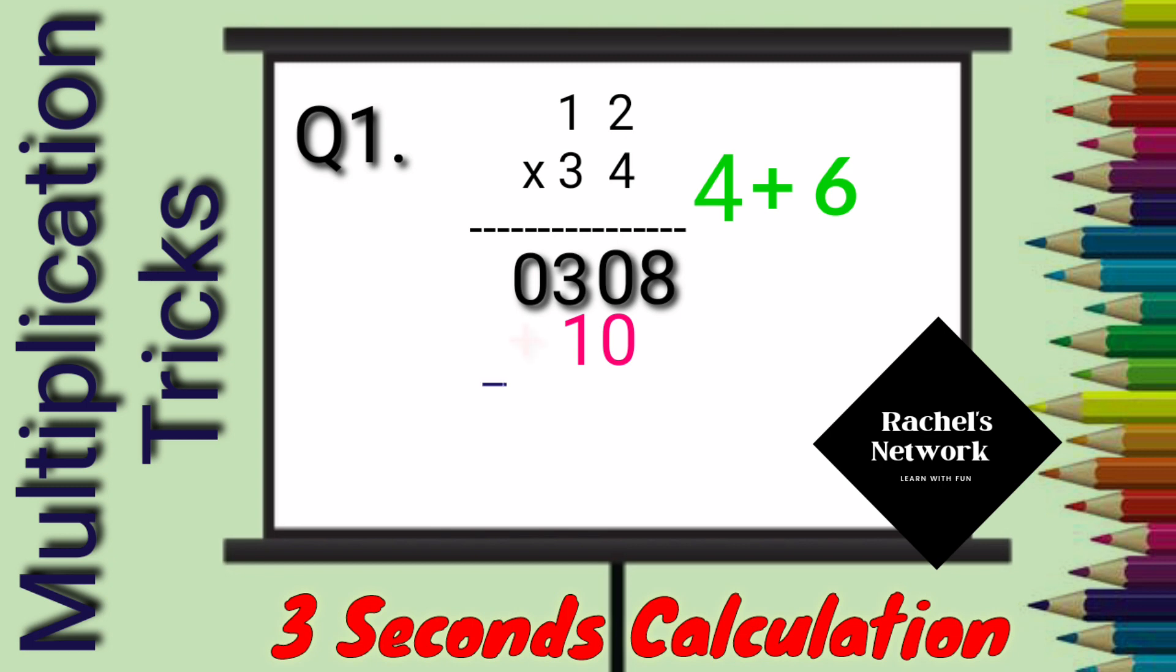Now, nothing you have to do. Just add it up. That is, the first number is 8. Second is 0. Fourth is 4. 3 plus 1 is 4. So, your answer for 12 x 34 is 408.